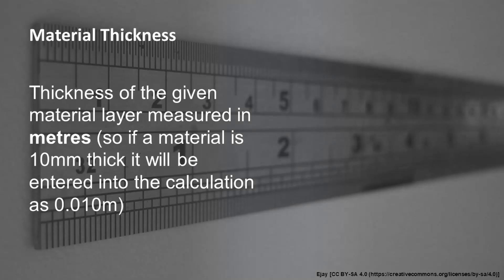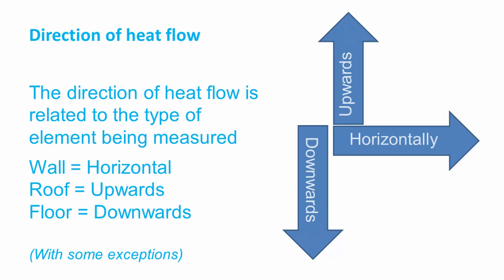We also need to know what the material thickness is. The thickness of the material within construction would be measured in metres for the calculation, even though we may deal with it in millimetres. Lastly, we need to think about the direction of heat flow, which is usually upwards, downwards, or horizontally, depending on the type of element we're trying to measure.